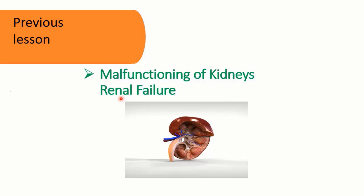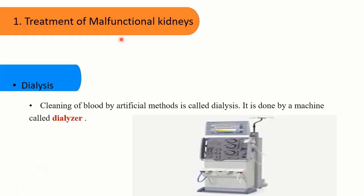We also discussed the causes of renal failure. In today's lecture, we are going to discuss the treatment of renal failure. The first treatment is dialysis. Cleaning of blood by artificial methods is called dialysis. Dialysis refers to the removal of waste and fluid from the body by artificial means.